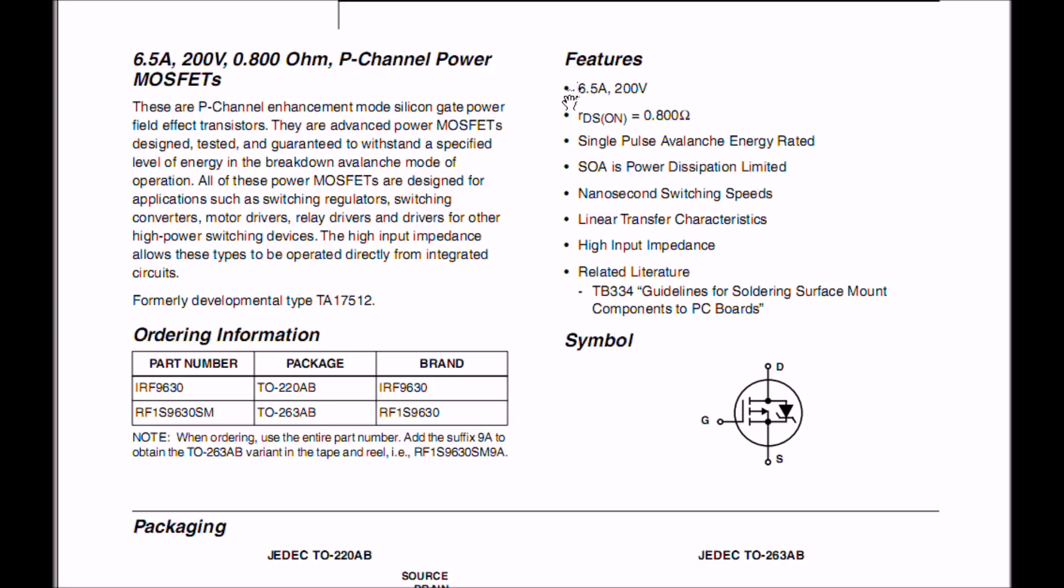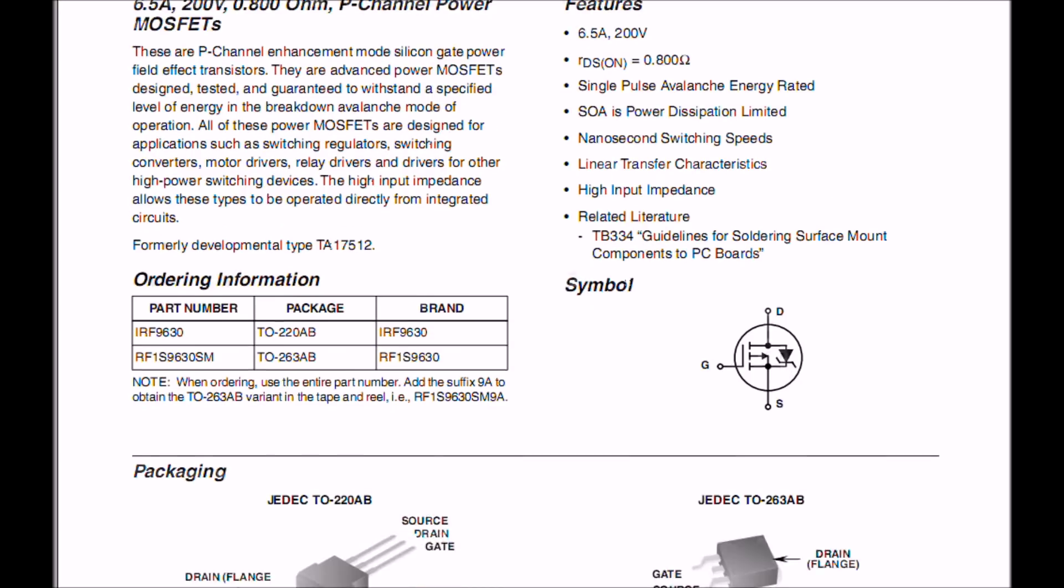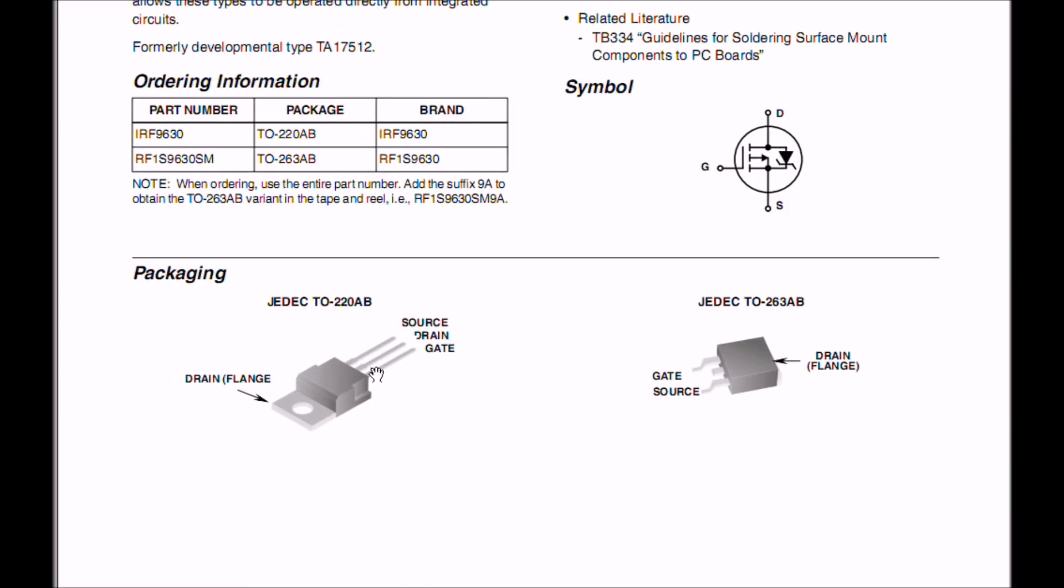Again, this one's rated at 6.5 amps at 200 volts. Once again, you have an internal parasitic diode. As before, I usually don't draw those in the schematics. I will usually put a note out there that they're internal to the device, like the 630. The case style is exactly the same.